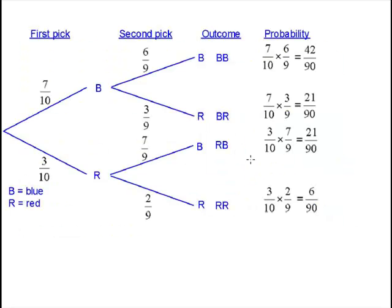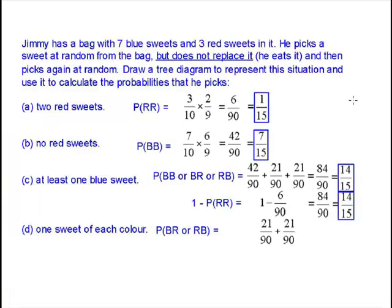One sweet of each color. Well, it's either blue then red, or red then blue. So it's these two added up. Let's do that quickly. 42 ninetieths, canceling down to 7 fifteenths. And we've done it!